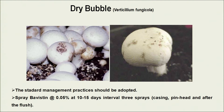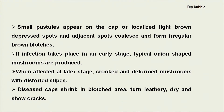The next important disease is dry bubble — also a serious disease where similar management practices are followed as for wet bubble. If disease appears, we can spray Bavistin at 0.05 percent at 10 to 15 day intervals, especially at the time of casing, pin formation, and after the first flush. Small pustules or spots appear on the cap, later merging into irregular shapes. If infection occurs early, fruit bodies look like onions. If affected at a later stage, deformed mushrooms with distorted caps appear. The cap shrinks, turns leathery and dry, and cracks. Symptoms depend on the time of infection.